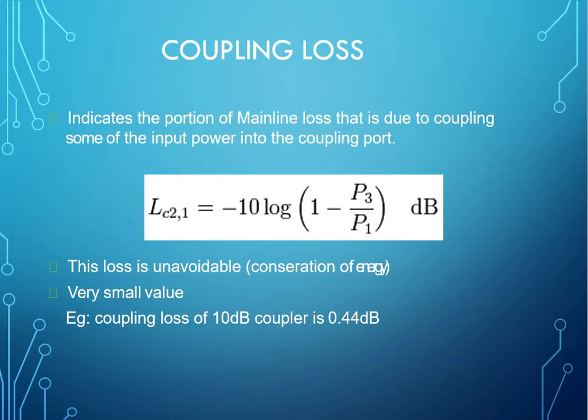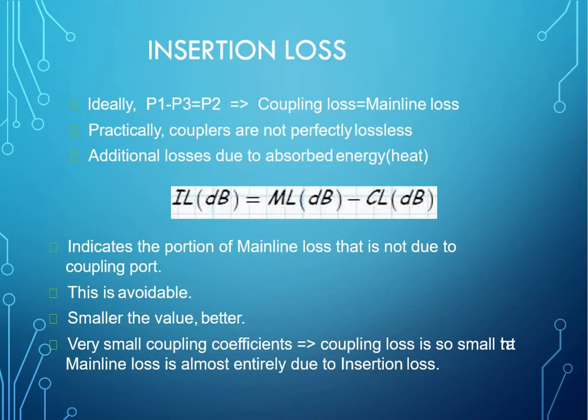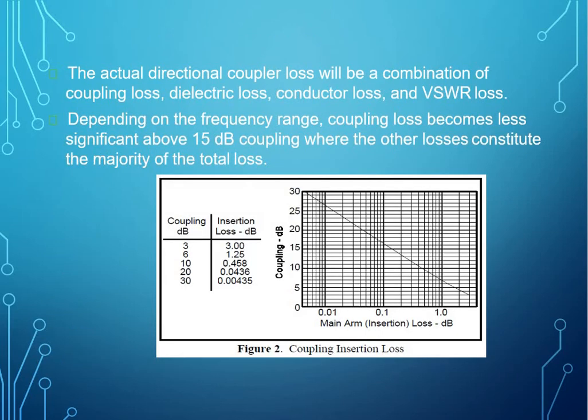Next comes insertion loss. Ideally, when we consider two different powers P1 and P3, or port 1 and port 3 equal to port 2, it gives the coupling loss or the mainline loss. Practically, couplers are not perfectly lossless. The additional losses due to absorbed energy, that is heat, is always there in directional couplers. It indicates the portion of main loss that is not due to the coupling in the ports. This is avoidable and could be corrected by some measures.